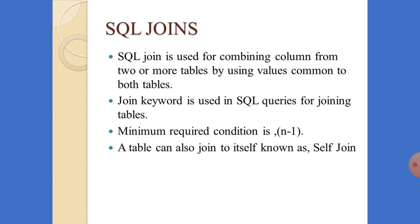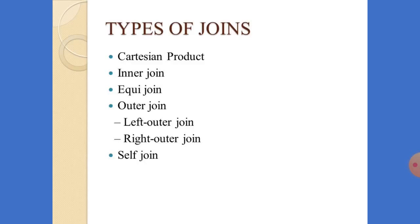We have different types of joins in SQL. One is the Cartesian product and another is the inner join. Next is the outer join, which is divided into two: left outer join and right outer join. Next is the equi join, and the last one is the self join — that means joining the table to itself.